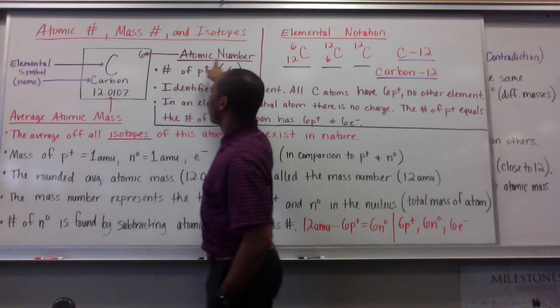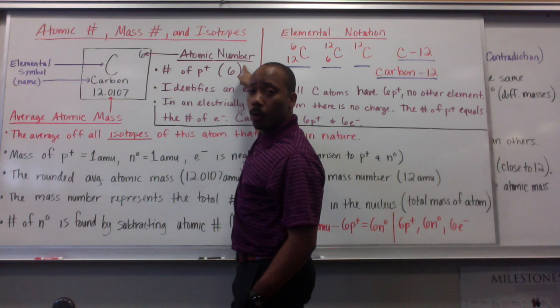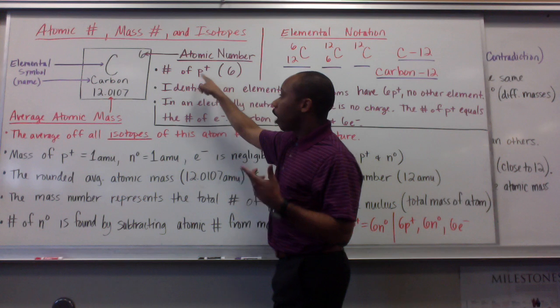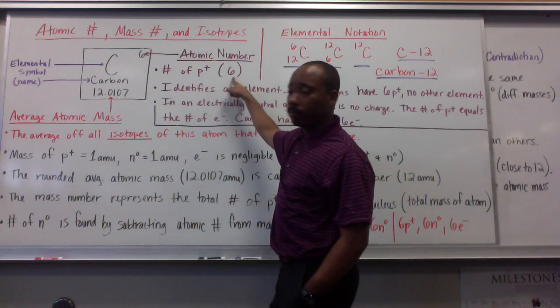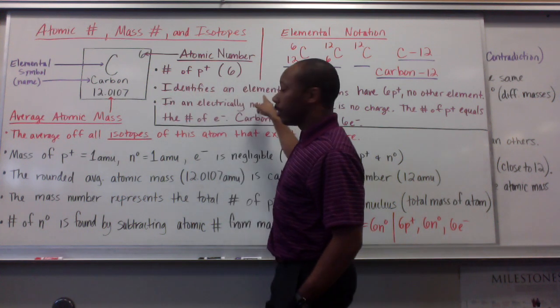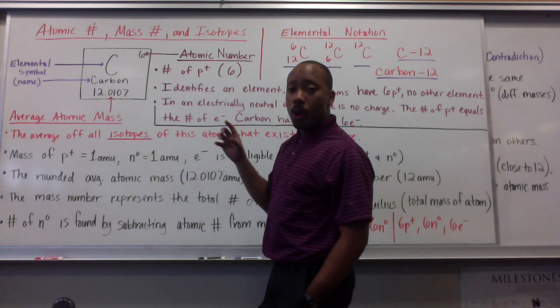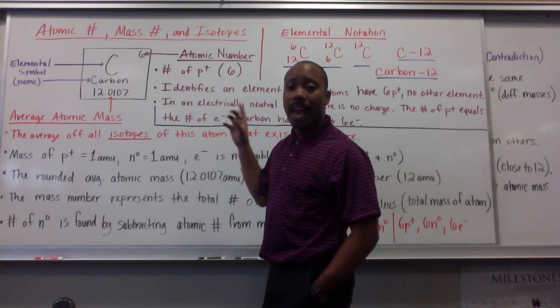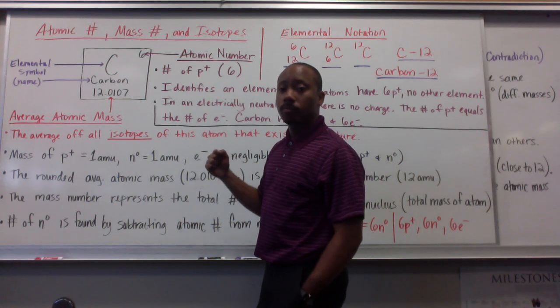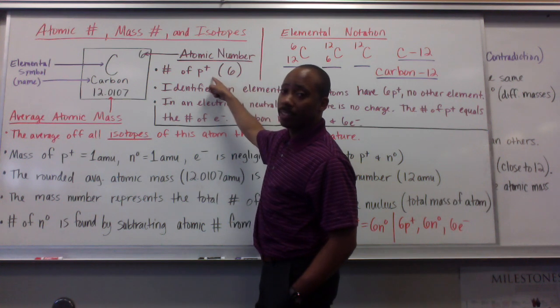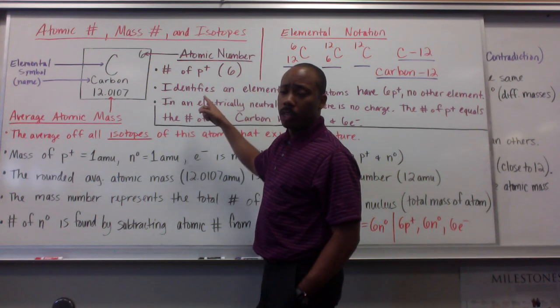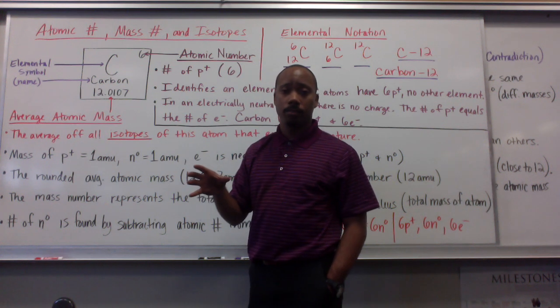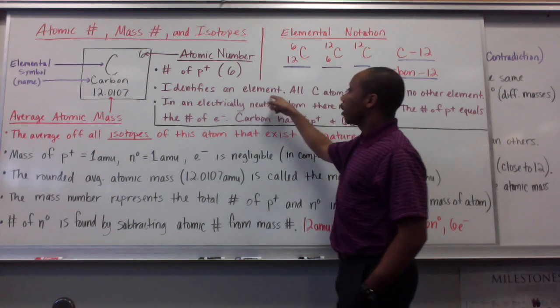Here we have something called the atomic number. The atomic number is very important. It tells you the number of protons in a particular atom. Carbon has six. Hence the six here. It also identifies an element. No element on the periodic table has the same atomic number. It is the atom's identity. So, the number of protons symbolizes the atom's identity. When the number of protons in an atom changes, the atom's identity itself changes.